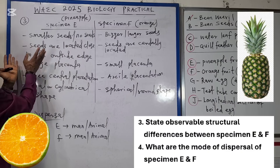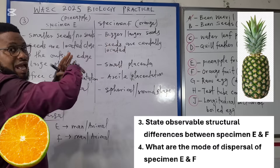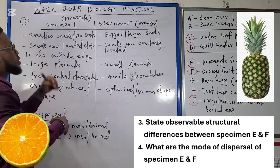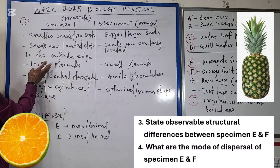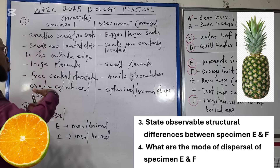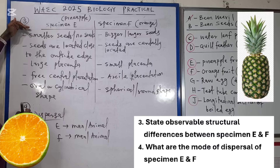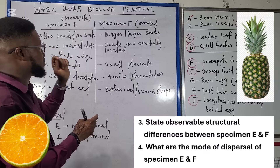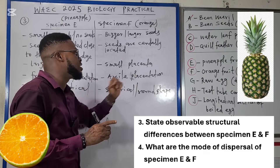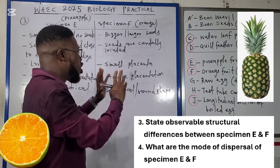In specimen E, the seeds, if present, are located on the periphery — close to the outside edge. In specimen F, the seeds are centrally located. Specimen E has a large placenta at the core, with free central placentation, while specimen F has a small placenta with axile placentation. Specimen E is oval or cylindrical in shape, while the orange is spherical or round.